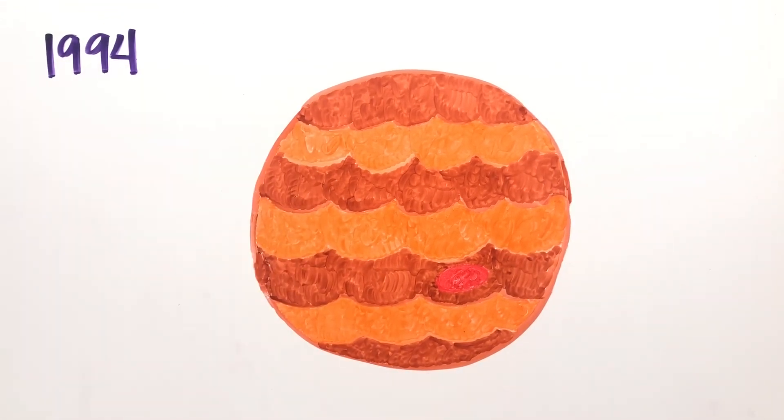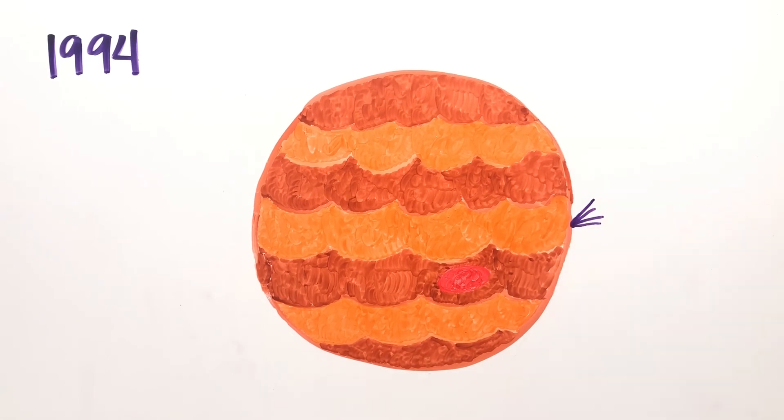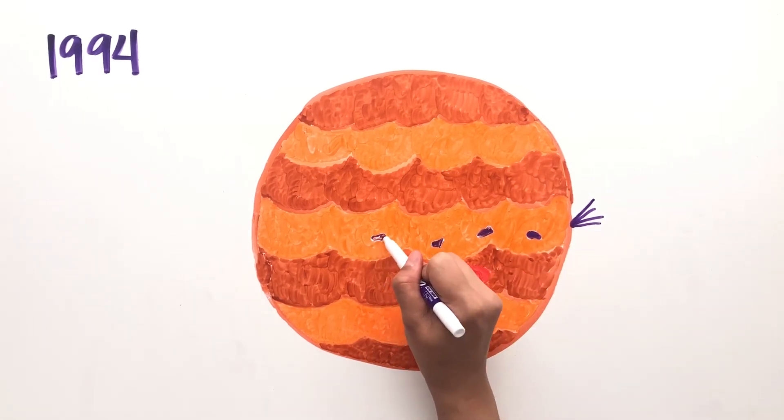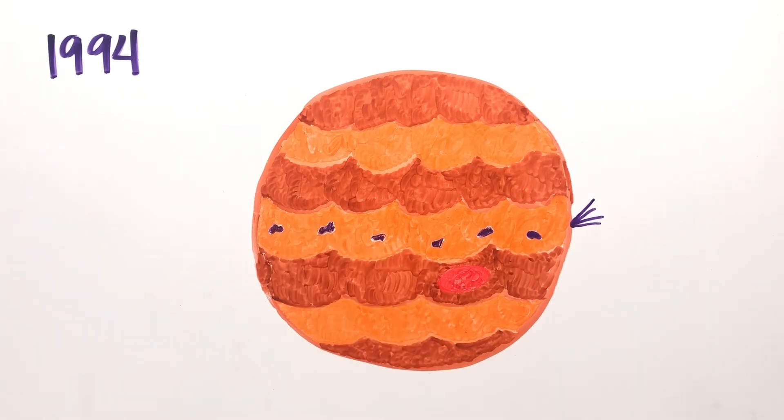In July 1994, a comet called Shoemaker-Levy 9 crashed into Jupiter. The planet spins so fast that 21 separate fragments of the comet smashed into Jupiter's atmosphere.